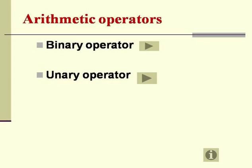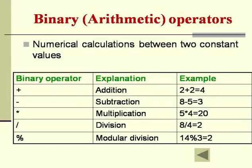The arithmetic operators in C. In this, we have 2 types: we have a binary operator and a unary operator. Now, we will look at each of these in detail.